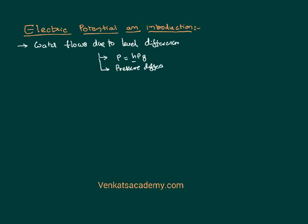If there is no level difference between the two points, there is no pressure difference between the two points, then there is no flow of water from one place to another place. Similarly, how does heat flow? Heat is a form of energy. How does heat flow when one body is connected with another body? That is due to a temperature difference. Heat flows between two bodies because of the temperature difference — heat always flows from a body of higher temperature to a body of lower temperature. If there is no temperature difference between the bodies, there is no flow of heat energy.